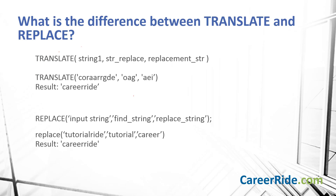What is the difference between TRANSLATE and REPLACE? TRANSLATE is used for character-by-character substitution. It replaces a single character at a time. For example, the first character of the string to be replaced will be replaced by the first character of the replacement string, the second character by the second character of the replacement string, and so on. In this example, O is being replaced by A, A by E, and G by I.